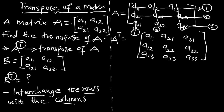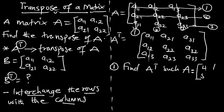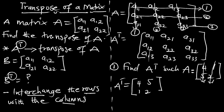Let's look at an example. Find A transpose such that matrix A is given as [4, 1; 5, 2]. We are to transpose this matrix. A transpose is going to be: the first column replaces the first row, giving us 4 and 5; the second column replaces the second row, giving us 1 and 2. So A transpose equals [4, 5; 1, 2].